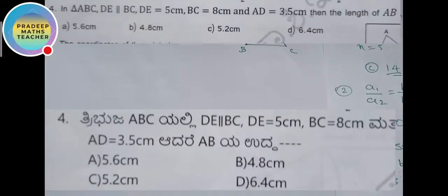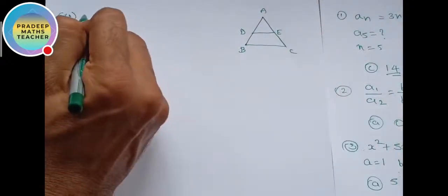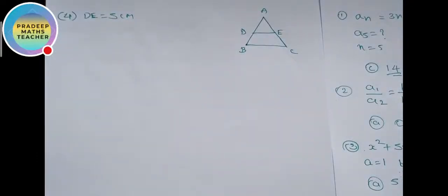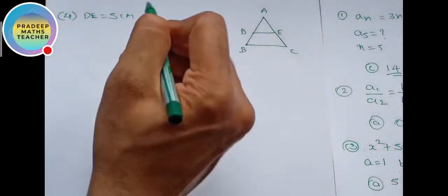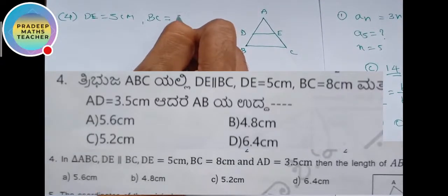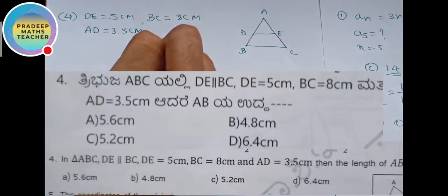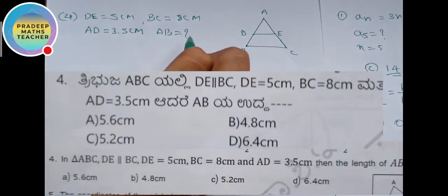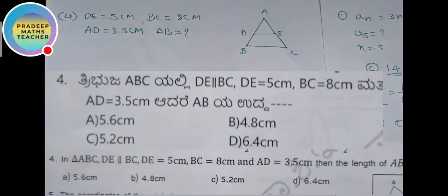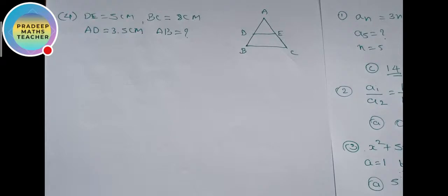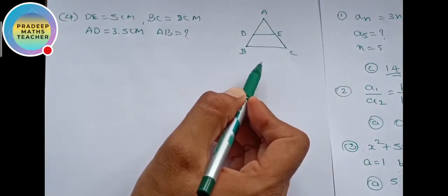The next question is: in triangle ABC, DE is parallel to BC. DE equals 5 cm, BC equals 8 cm, and AD equals 3.5 cm. Find AB. Since DE is parallel to BC in triangle ABC, we can apply the Basic Proportionality Theorem, also known as the Thales theorem.